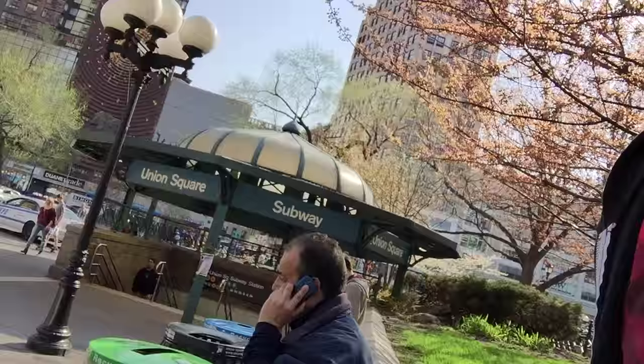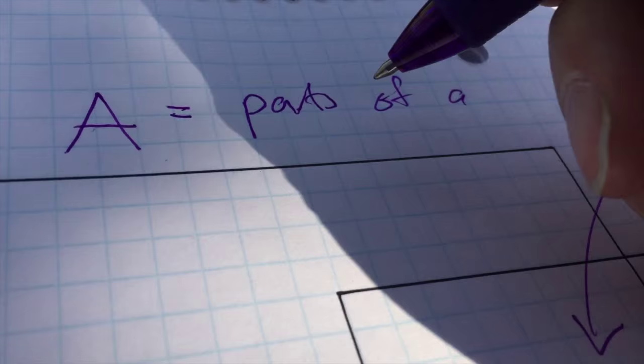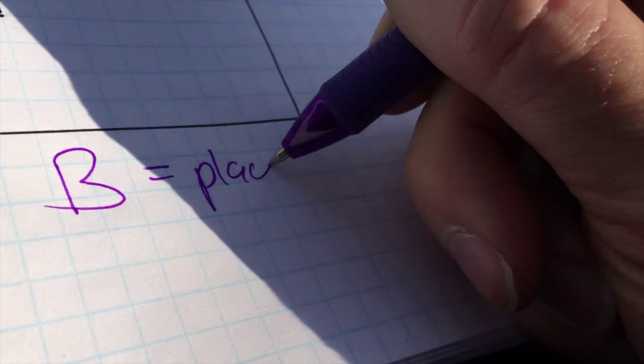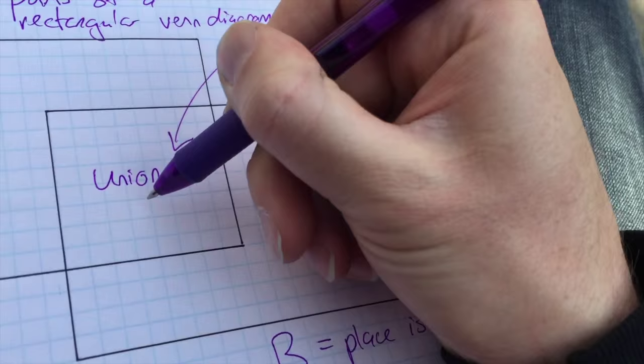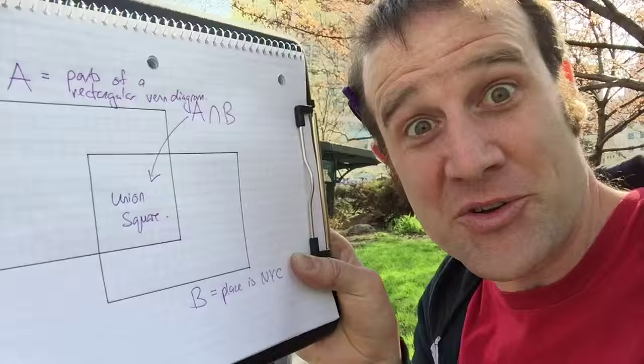Fun fact about Union Square: it's named after the middle of a rectangular Venn diagram. I've actually drawn it so you can see there's section A, section B — parts of a Venn diagram. And B equals places in New York City. And here is Union Square. Now I've put Union Square in the Union Square while it's in Union Square.